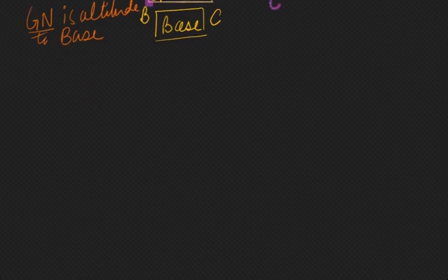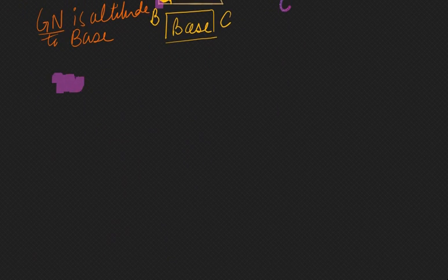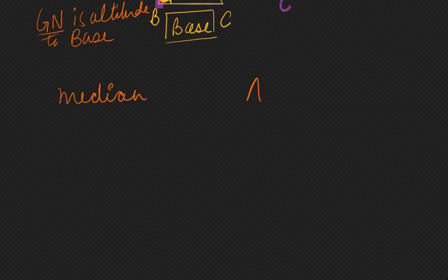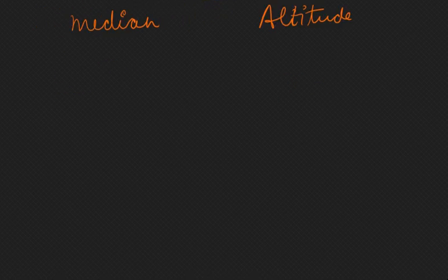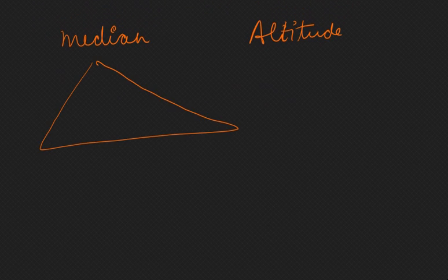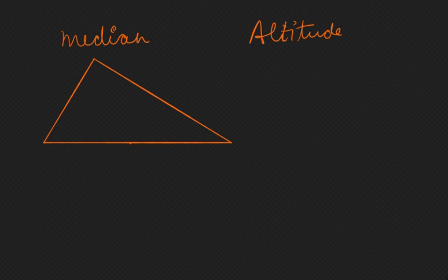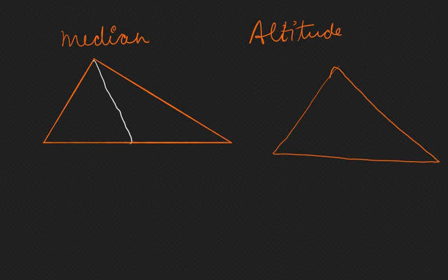Now what is the difference between a median and altitude? Median divides the triangle into two equal halves, two equal areas you can say. But altitude, if we draw the altitude, altitude shows the height. So this is the difference between median and altitude.